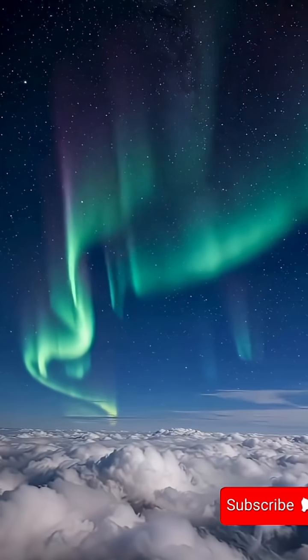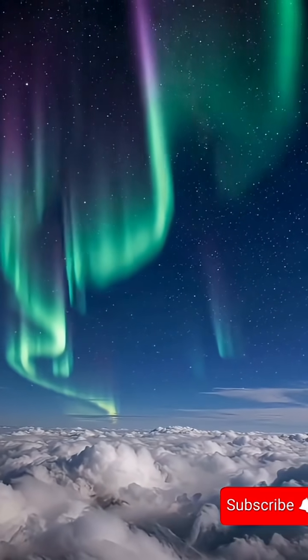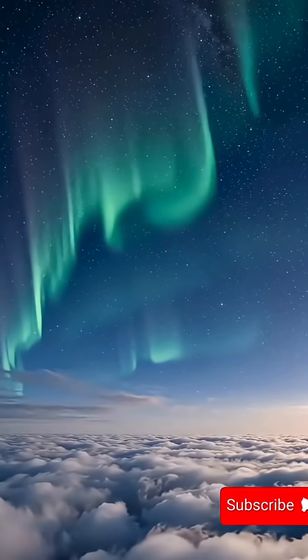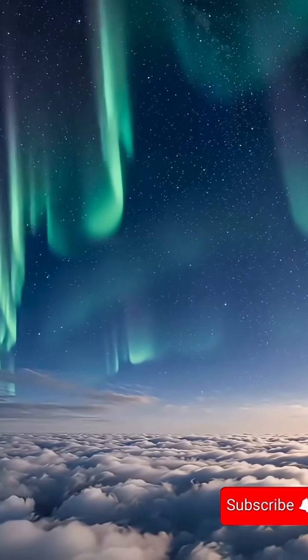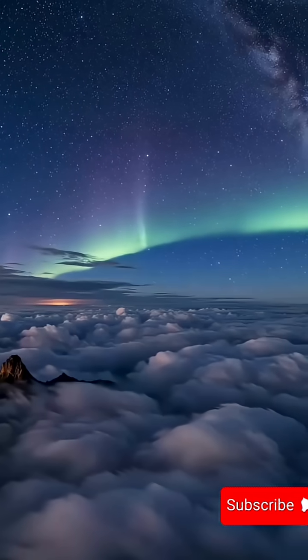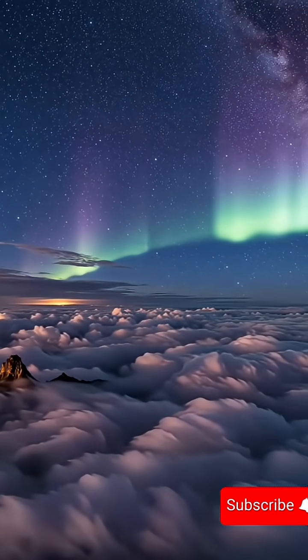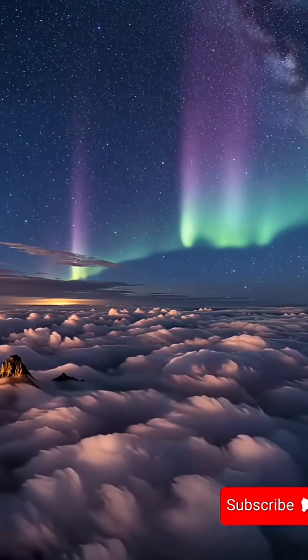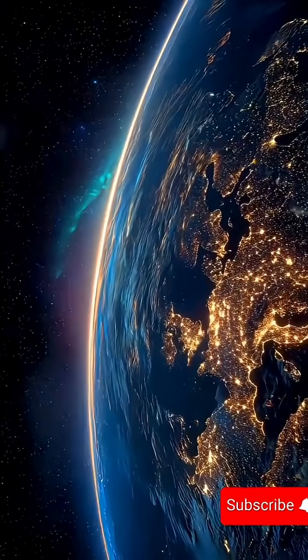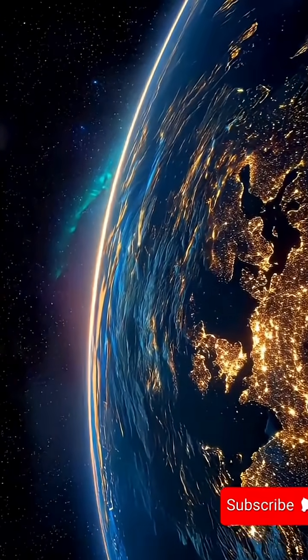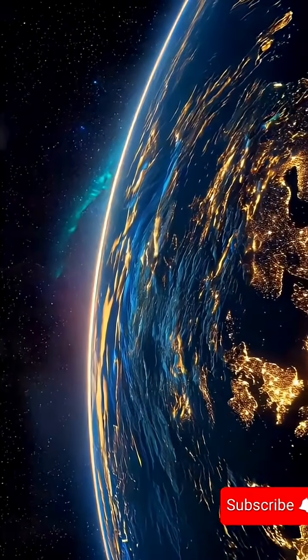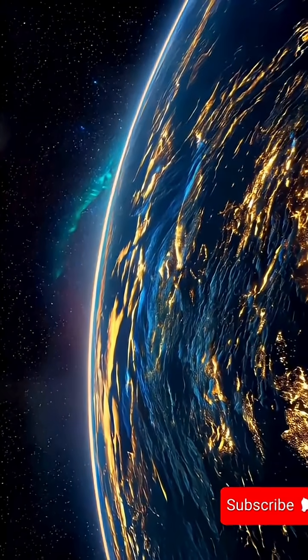Where is our solar system really going? We often think it's just revolving around the sun, but in reality, the entire solar system is racing through space at nearly 828,000 kilometers per hour, orbiting a supermassive black hole called Sagittarius A at the center of our Milky Way galaxy. One orbit around it takes about 250 million years.